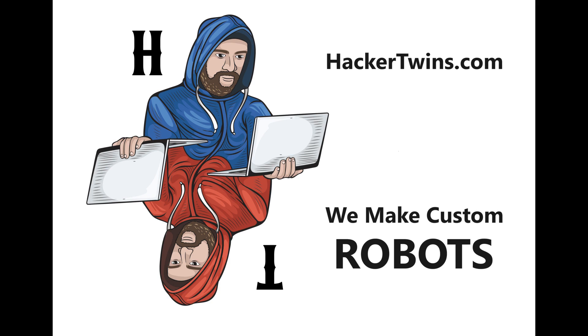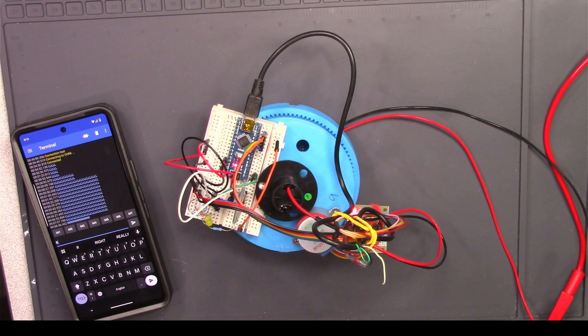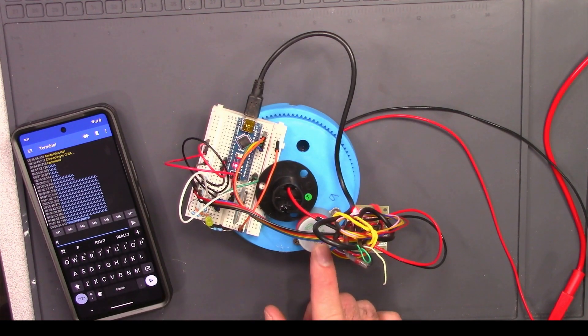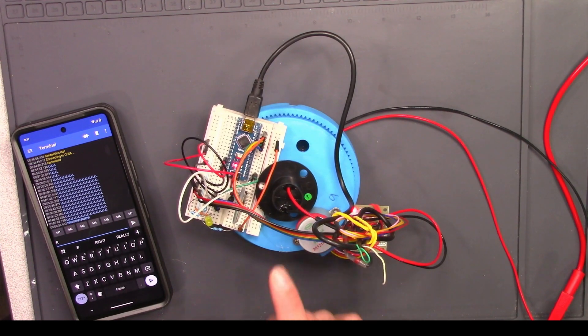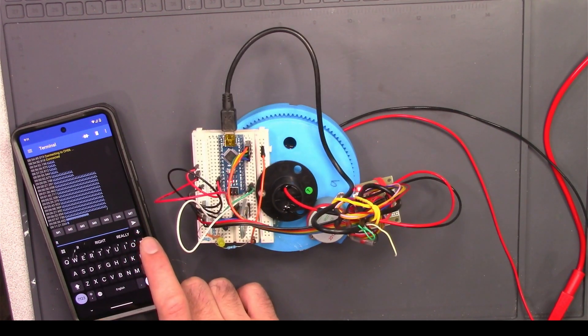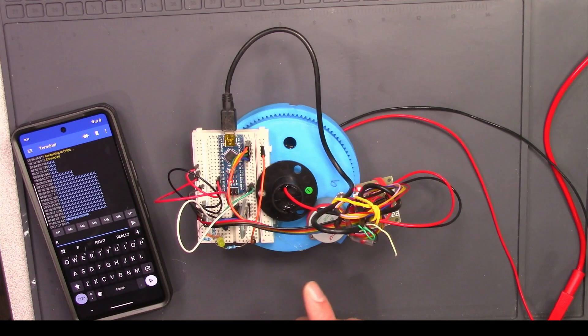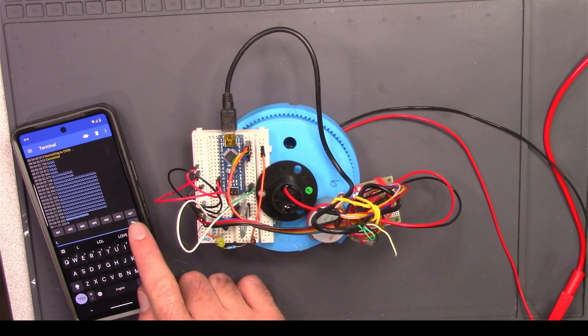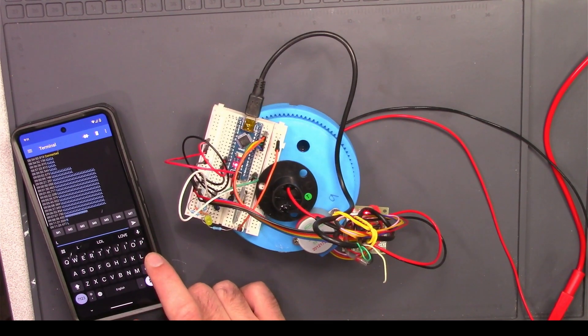We're Hacker Twins, like and subscribe. Susan spins round and round thanks to this stepper motor right here. The stepper motor is connected to the Arduino, and the Arduino has a Bluetooth chip on it. Sending capital R to the Bluetooth chip will make the stepper motor spin 10 steps to the right. Sending capital L will make it spin 10 steps to the left.